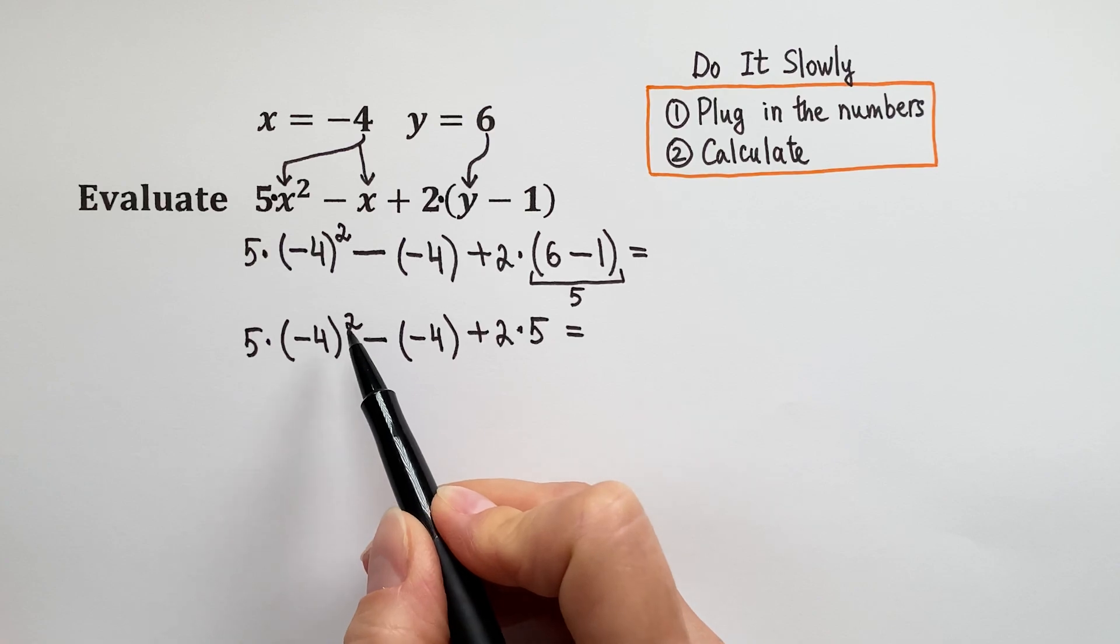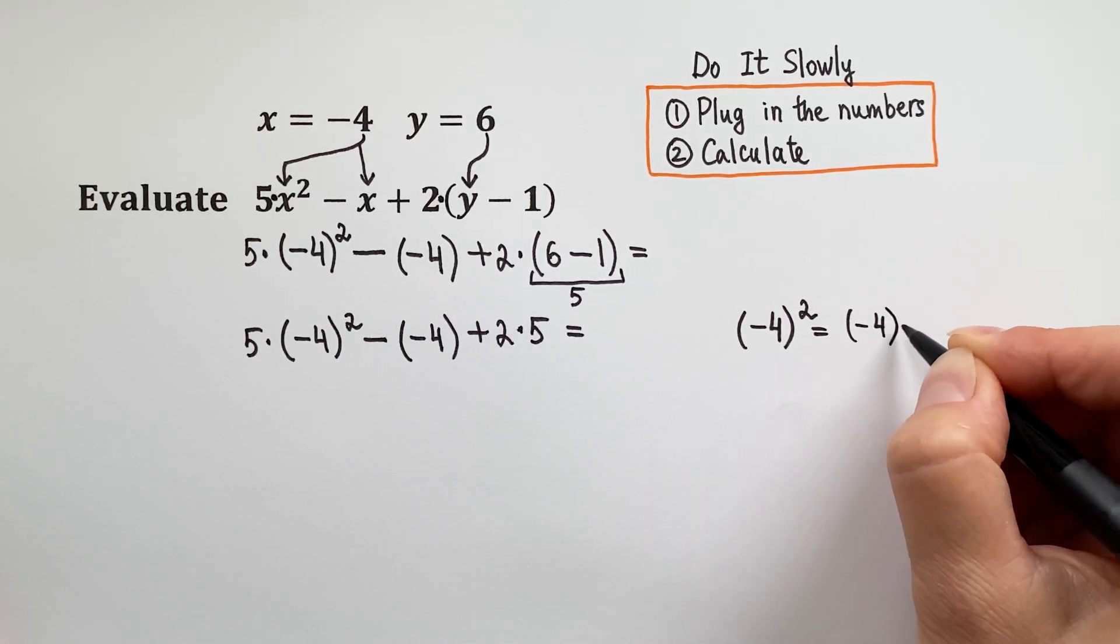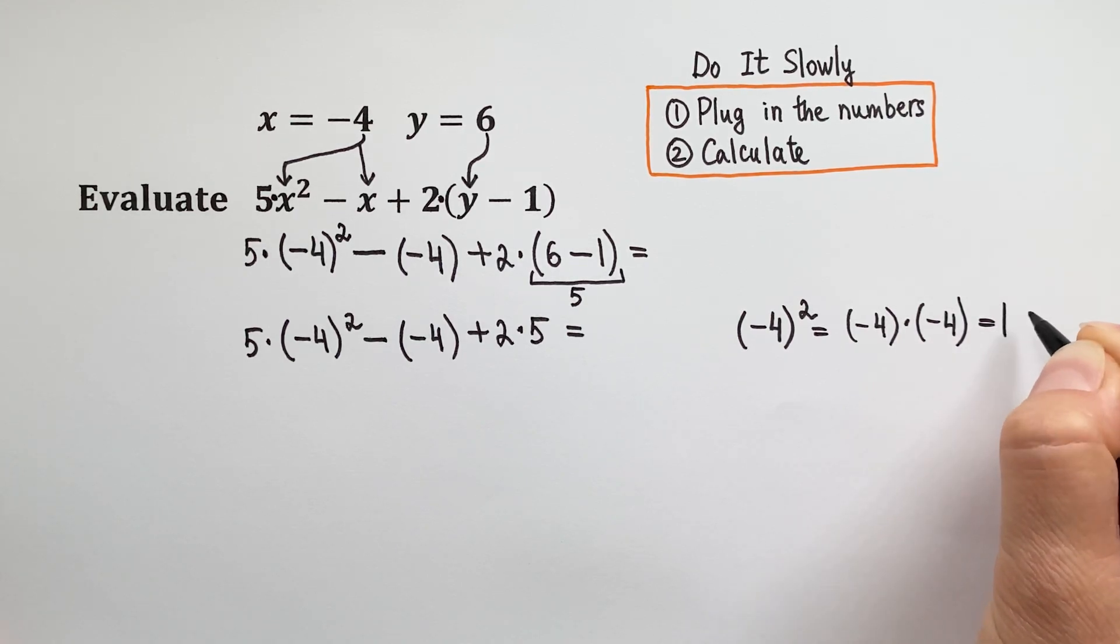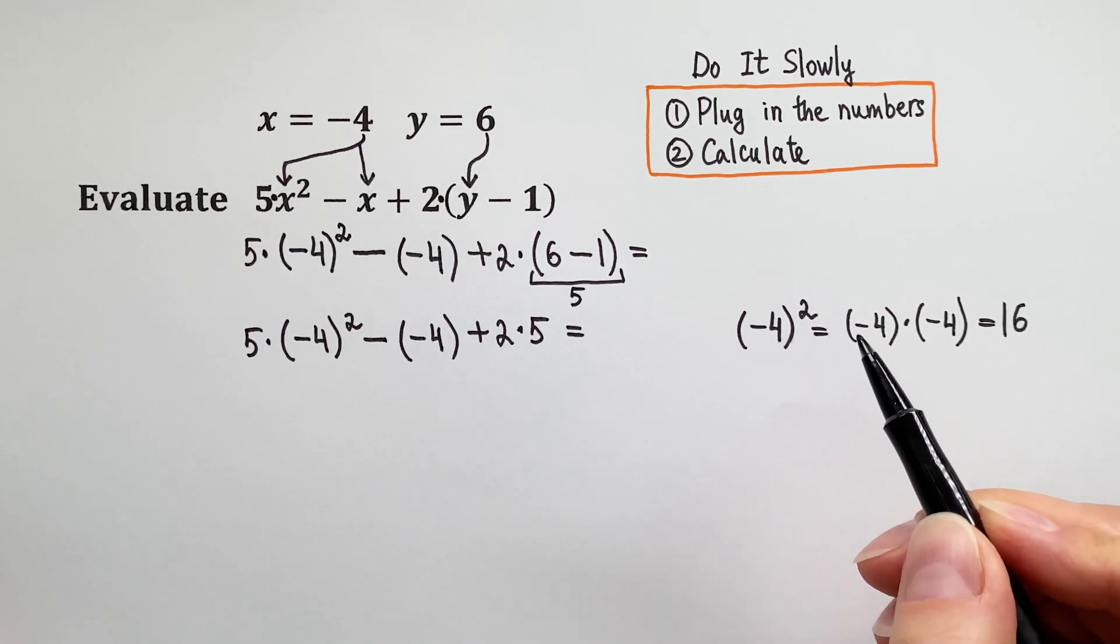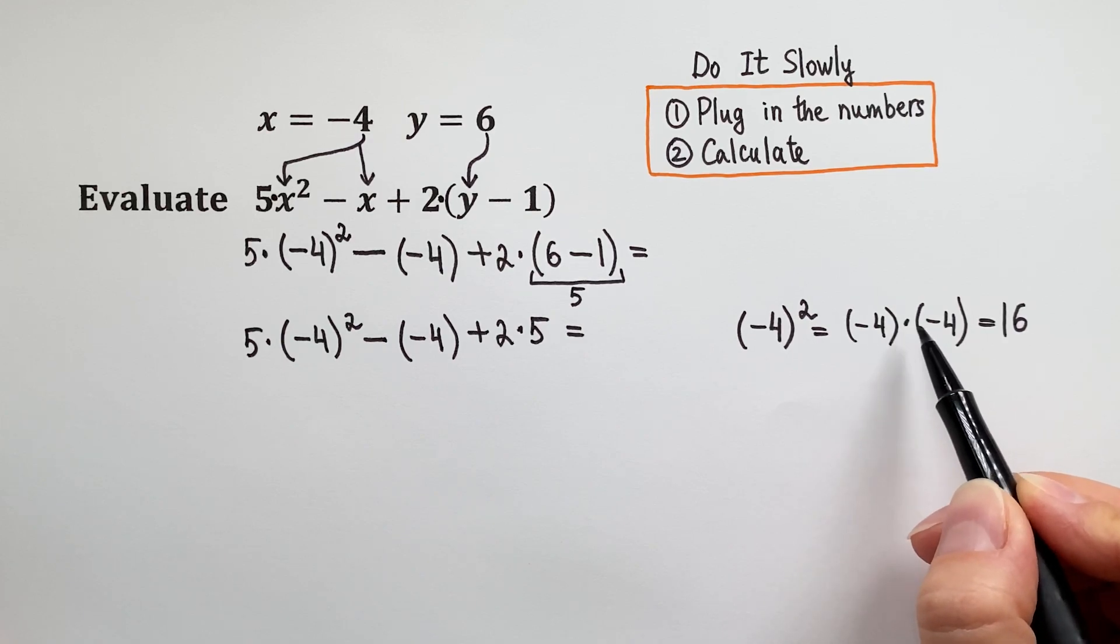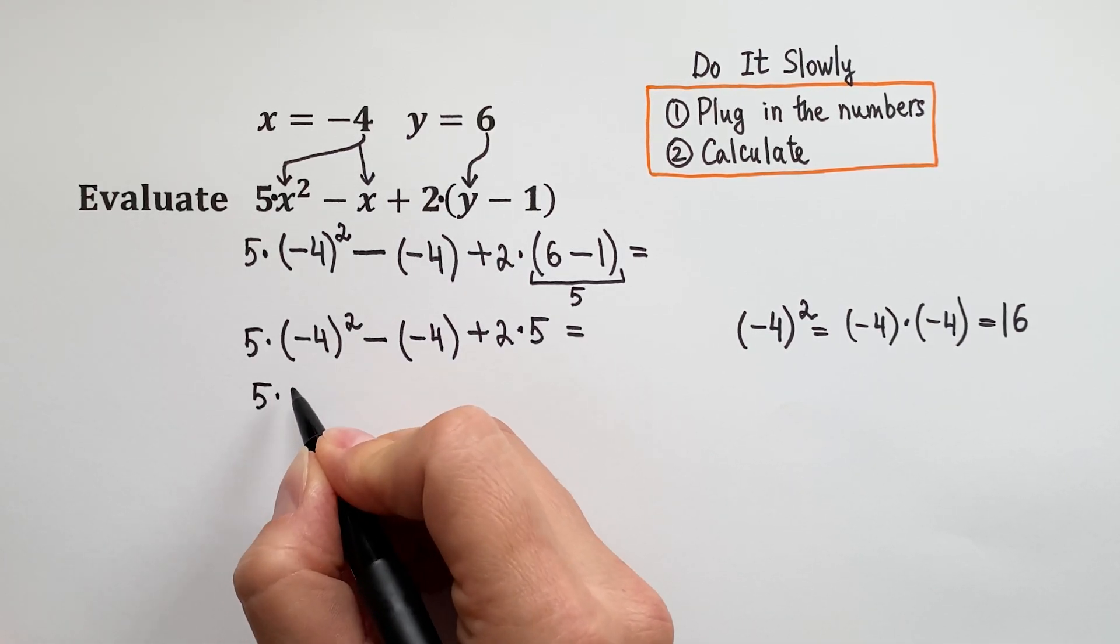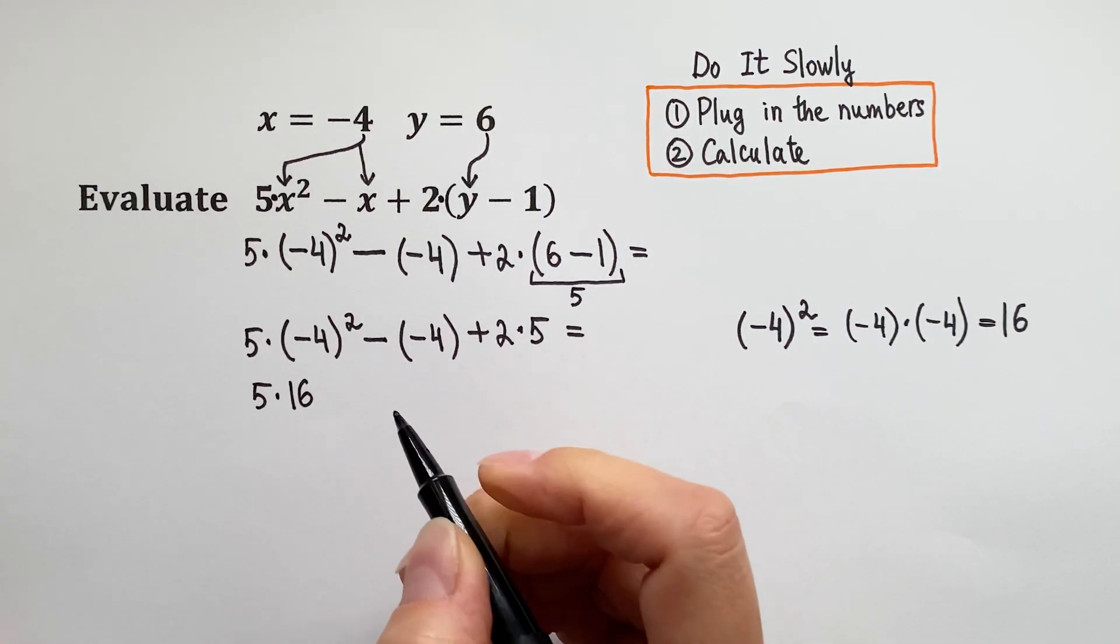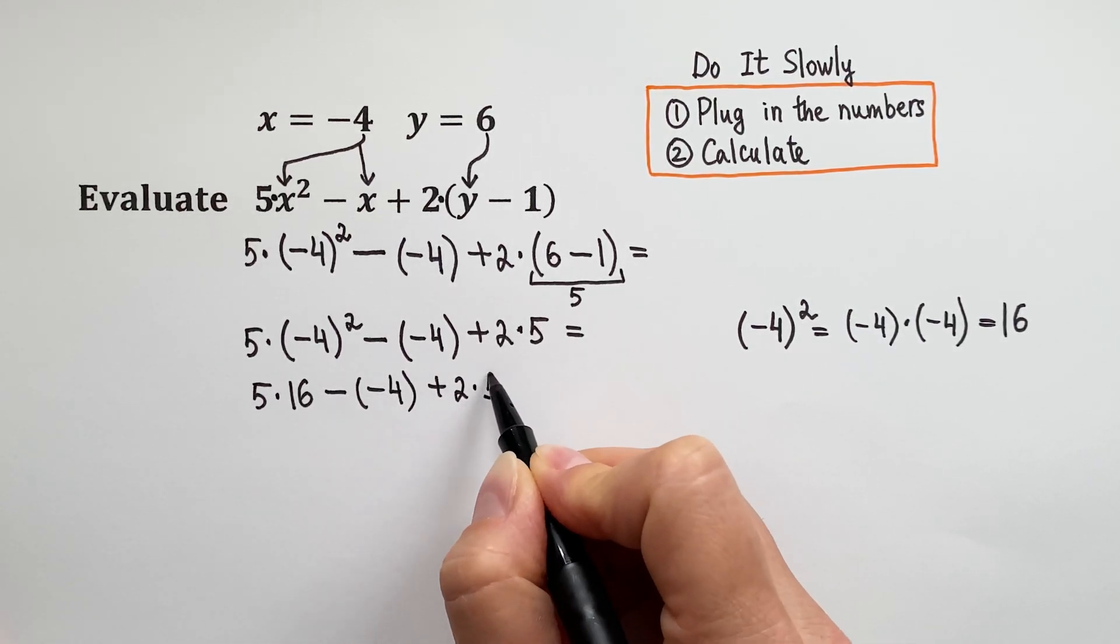Next we must take care of this exponent. We have negative 4 squared. So negative 4 squared means negative 4 times negative 4, which is positive 16. Be careful! When you see negative 4 raised to the second power, do not accidentally multiply negative 4 by 2. It is not correct. Negative 4 squared means negative 4 times negative 4. Let's take 16 and plug it in here. So 5 times 16 and then we have minus negative 4 plus 2 times 5. We are almost done!